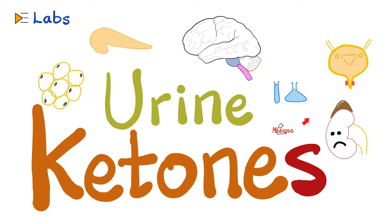Hey guys, it's Medicosis Perfectionaries, where medicine makes perfect sense. Let's continue our series called Labs — you'll find this playlist on my YouTube channel. In previous videos, we talked about urine chloride, urine uric acid, urine cortisol, beta-2 microglobulin, lactate dehydrogenase, lactic acid, methemoglobin, and the famous Bence-Jones proteins. Today, let's talk about urine ketone bodies.